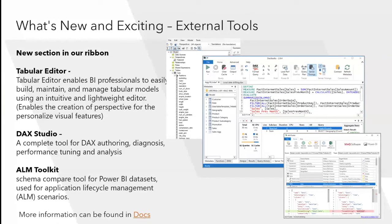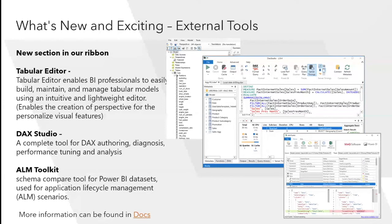Tabular Editor enables BI professionals to easily build, maintain, and manage tabular models. You can create a perspective — essentially a defined view of fields, measures, and dimensions from your tables — that end users can then see and add to visuals. After saving the perspective in the tabular model, the feature automatically appears in the visualization page for users who have enabled the preview. It's still preview, so try it at your own risk.